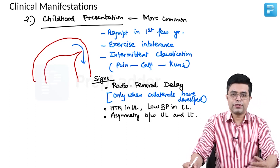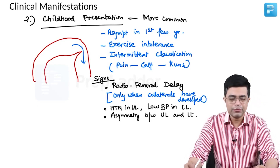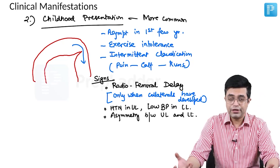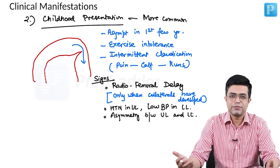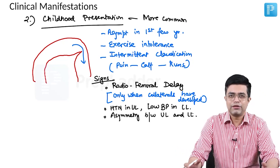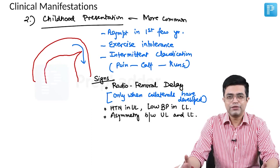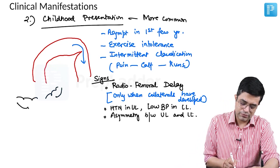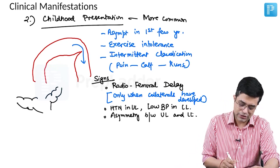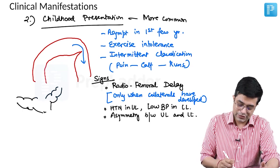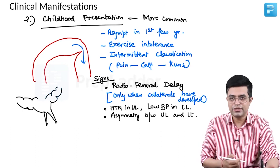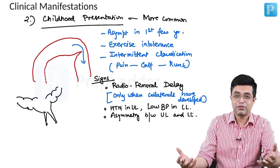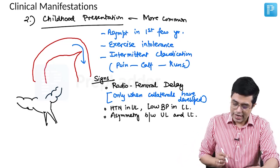Chronically, these children develop asymmetry between upper and lower limbs. Like a bodybuilder who only trains the upper body and never does leg exercises — very developed upper torso but thin, rickety lower limbs — these children similarly develop very well-developed upper limbs and poorly developed lower limbs.